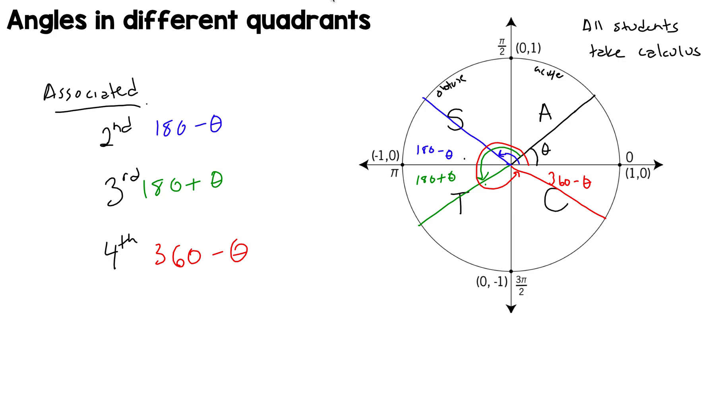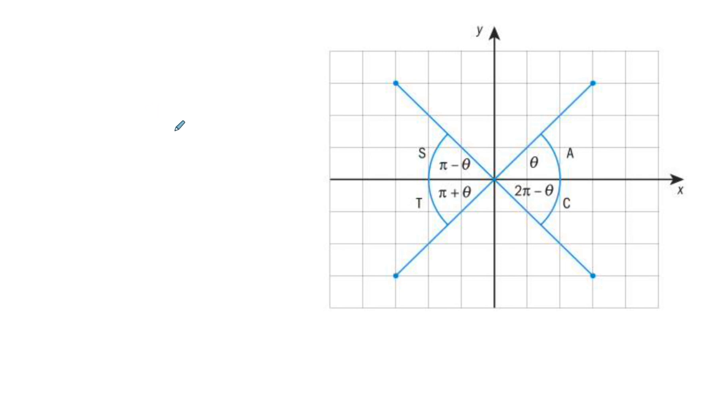Again, it doesn't seem like it makes any sense, but hopefully it will later on. Obviously, these are in 180, 180, 360, but you can also look at them in terms of radians as well. So this will be π, then you have π minus θ in the second quadrant, π plus θ in the third quadrant, and 2π minus θ.